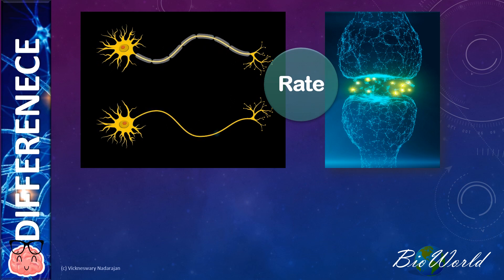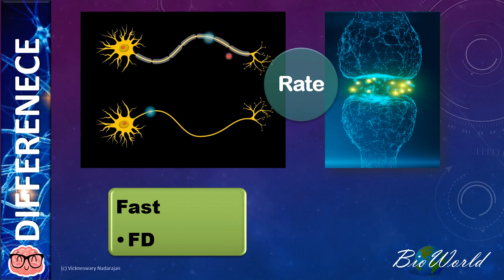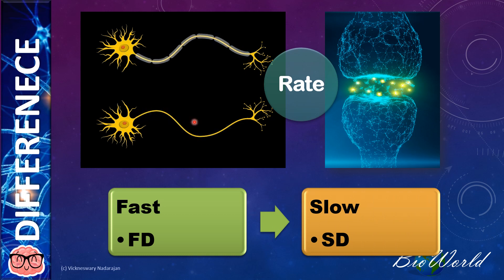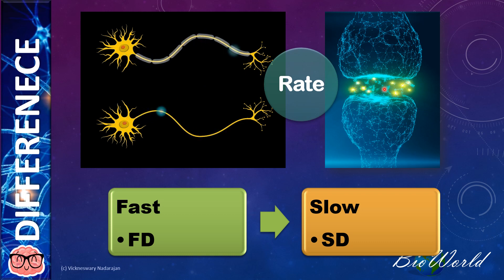The third difference is related to the rate of transmission. From the animation, you can clearly see that the rate of transmission along the axon is fast, whereas across the synapse is slow. The reason for this is because the transmission of impulse along the axon involves the influx of sodium ions via the open voltage-gated channels, so this is due to facilitated diffusion. Whereas in the synapse, it is dependent on simple diffusion of the neurotransmitters down the concentration gradient.